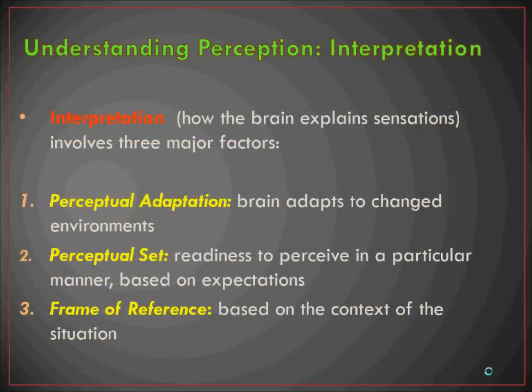Interpretation is the third and final piece of perception — this is essentially how the brain explains sensations and involves three major factors: perceptual adaptation, which is the brain adapting to changed environments; perceptual set, the readiness to perceive in a particular manner based on expectations; and frame of reference, based on the context of the situation.